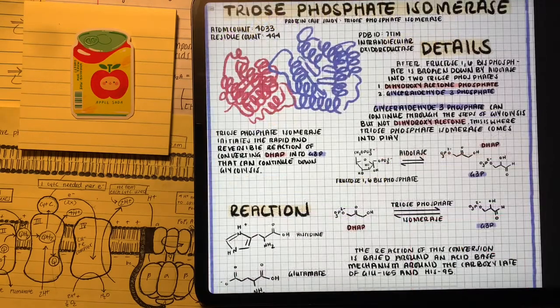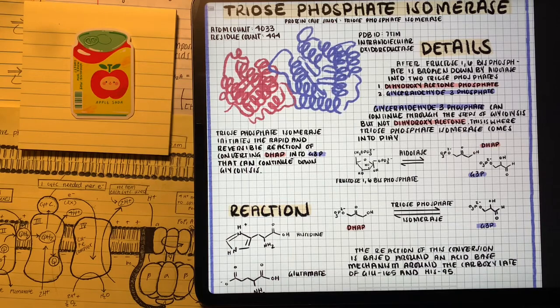First learning about glycolysis in biochemistry, this next step can be a little confusing because after this, the majority of the products will be doubled. In the last reaction with aldolase, we formed DHAP and G3P. But G3P is the product that continues down glycolysis. DHAP doesn't.